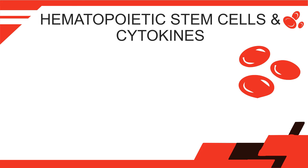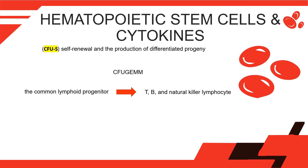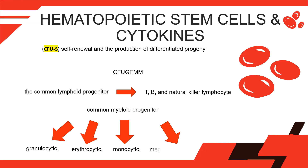Hematopoietic Stem Cells and Cytokines: Colonies of hematopoietic stem cells seen in the spleen were called colony-forming units spleen. They are capable of self-renewal and the production of differentiated progeny. Hematopoietic stem cells represent committed myeloid progenitors or colony-forming units — granulocyte, erythrocyte, monocyte, and megakaryocyte — capable of giving rise to multiple lineages of blood cells. The common lymphoid progenitor proliferates and differentiates into T, B, and natural killer lymphocyte and dendritic lineages, while the common myeloid progenitor differentiates into individual granulocytic, erythrocytic, monocytic, and megakaryocytic lineages.